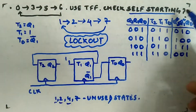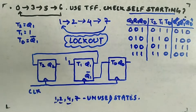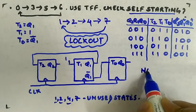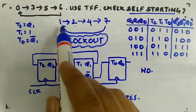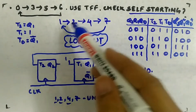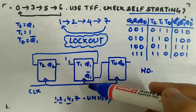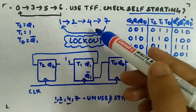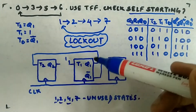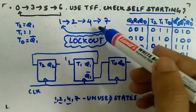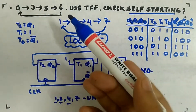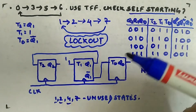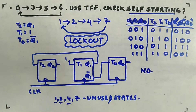This is called the lockout problem. The counter is not self-starting. Instead of counting 0,3,5,6, it gets stuck counting 1,2,4,7 indefinitely. What we want is: if any unused state occurs, after a few clock cycles the counter should return to the main sequence — but that is not happening here.